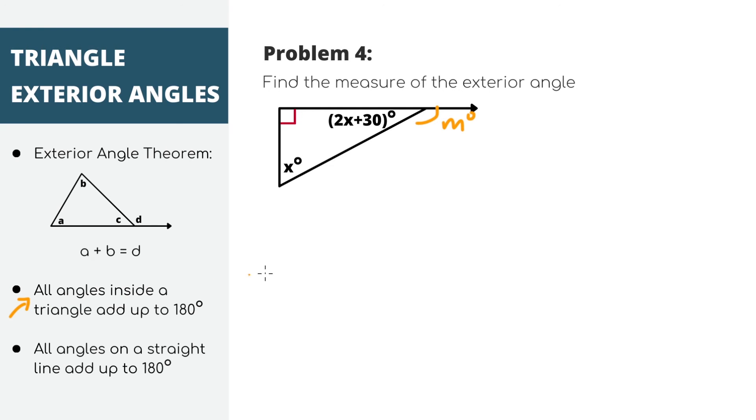So we know that all angles inside a triangle add up to 180. Let's use that fact to solve for x. Setting up our equation, we'll get 90 because this red symbol indicates that it's a right angle, which is 90 degrees, plus 2x plus 30 plus x equals 180. When we simplify all of this, we'll get that x equals 20.